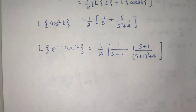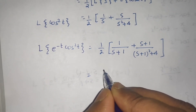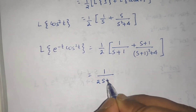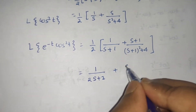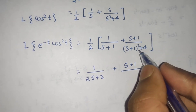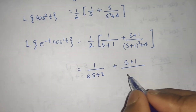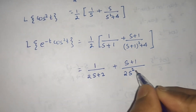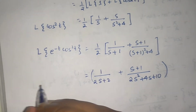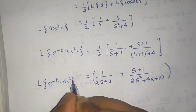Now if you want to further simplify by taking the half inside, you will get 1 over 2s plus 2, plus s plus 1 divided by s squared plus 2s plus 1 plus 4, which means s squared plus 2s plus 5. If you multiply by 2, it becomes 2s squared plus 4s plus 10. This can be given as your final answer for the Laplace of e to the power minus t cos squared t.